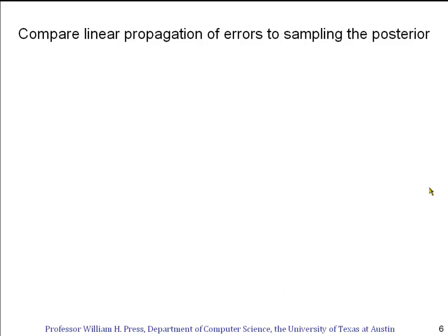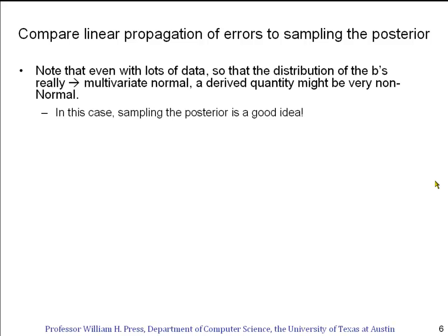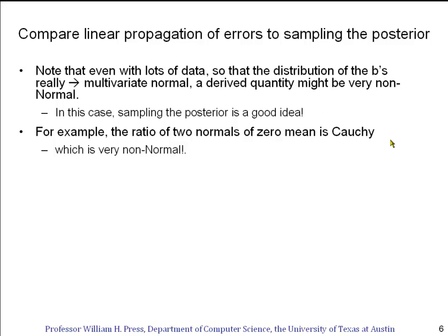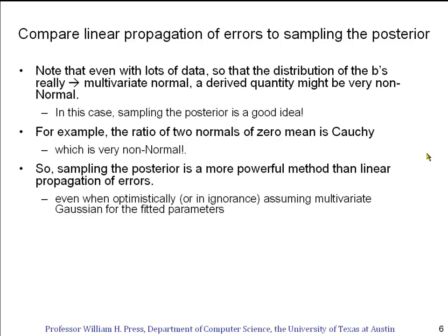So let's compare the two methods of finding the posterior distribution of a derived quantity that we've done in this segment. Notice that when you have lots of data so that the b's really become in the limit, the parameters really become in the limit, multivariate normal distributed. Then the derived quantity might be very non-normally distributed. In this case, sampling the posterior is really giving you more information than linear propagation of errors. Linear propagation of errors only gave you a mean and variance of the posterior. Here, with sampling, we get the whole distribution. For example, if our derived quantity was a quotient, was the ratio of two normals of zero mean, that turns out to be a Cauchy distribution, which is very non-normal. So sampling of the posterior is a more powerful method than linear propagation of errors.